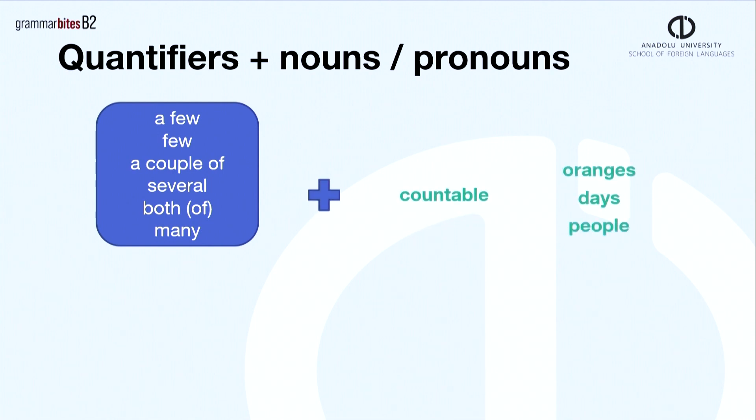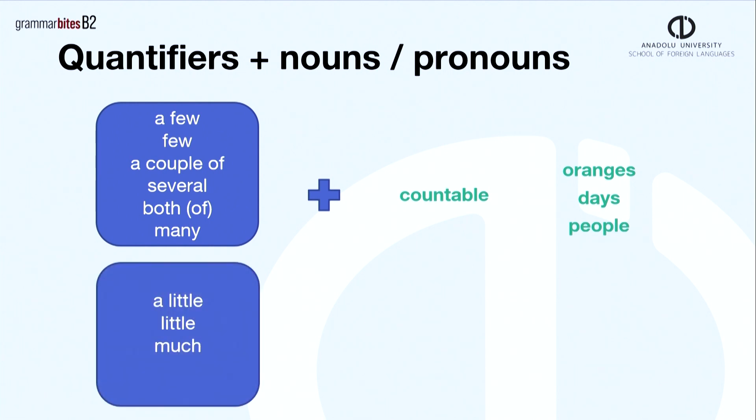For example, a few oranges, a couple of days. But, a little, little and much are used before uncountable nouns. For example, a little milk or much space.